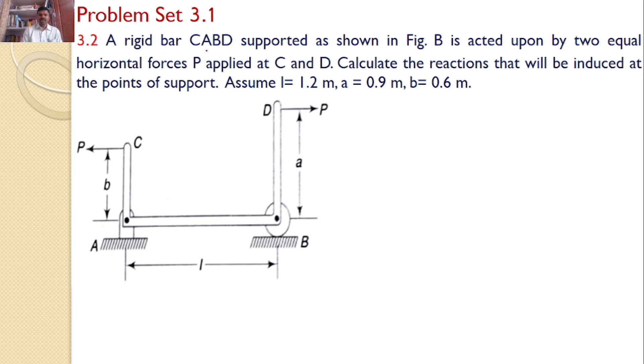A rigid bar CABD supported as shown in figure B is acted upon by two equal horizontal forces P applied at C and D. Calculate the reactions that will be induced at the points of support. Assume L equals 1.2 meters, a equals 0.9 meters, b equals 0.6 meters.